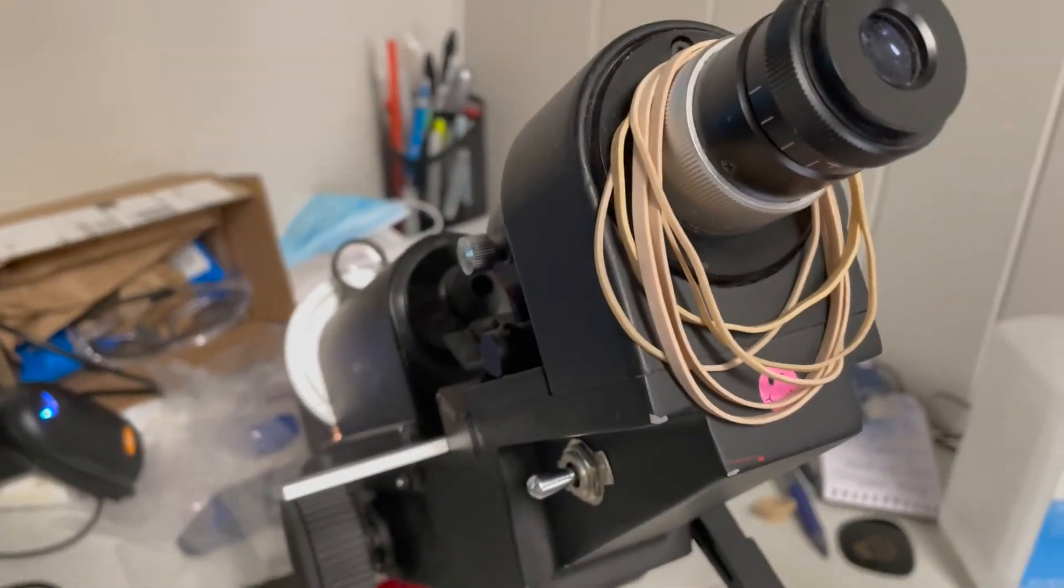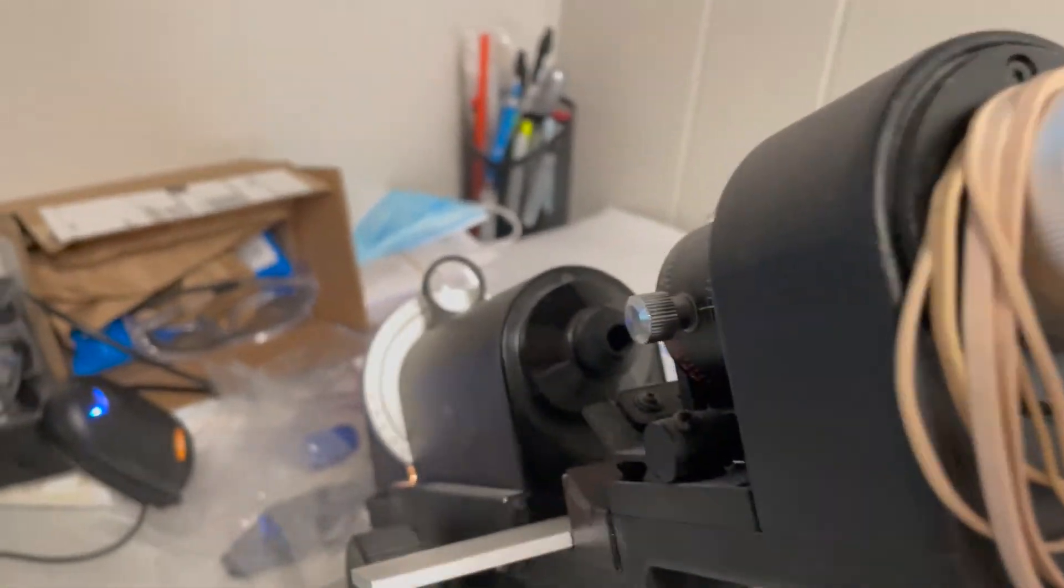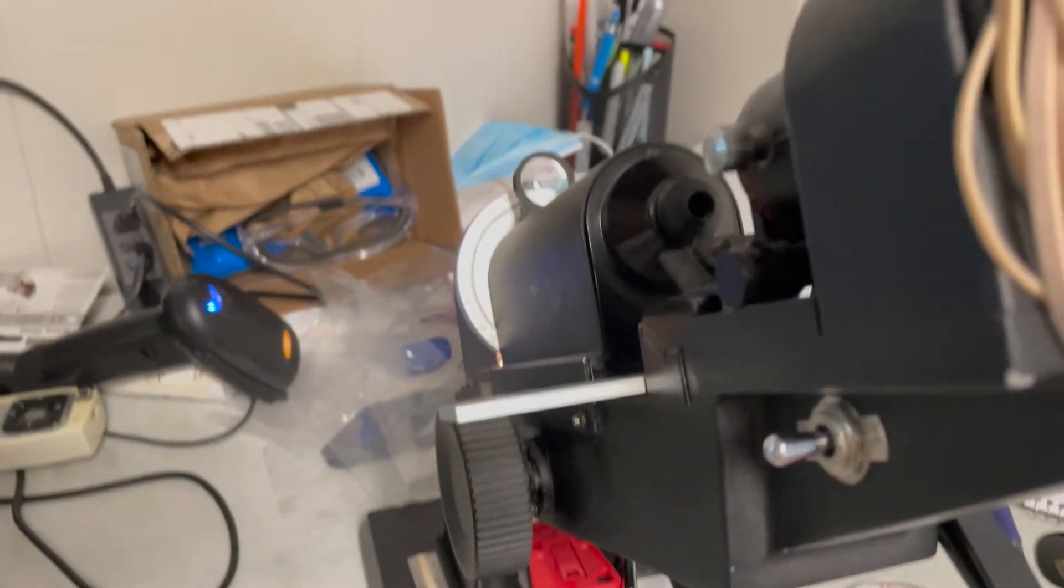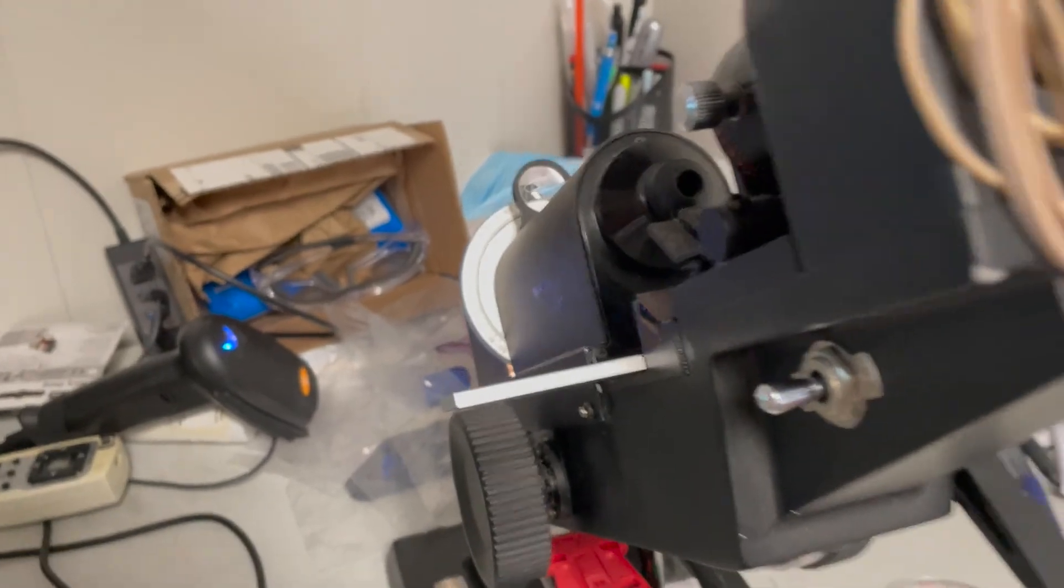And this of course is the trusty rubber band holder as you will see on most lens meters. It just happens to be a real handy place to put them. So this is an overview and thank you for watching.